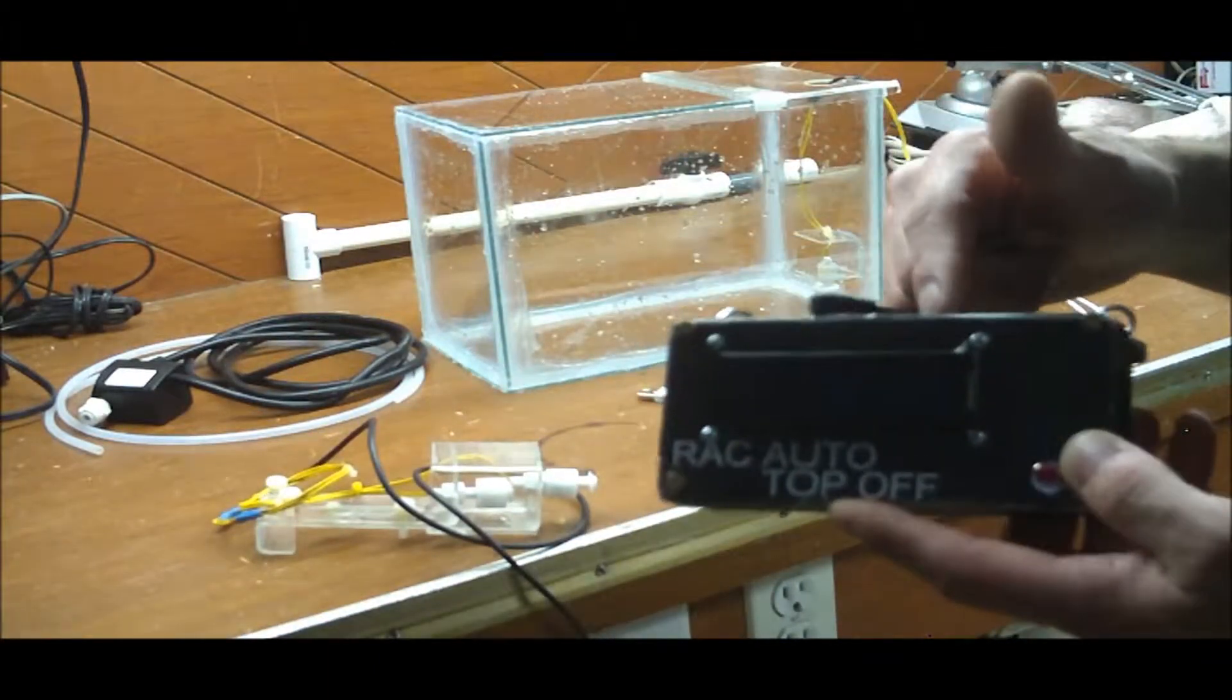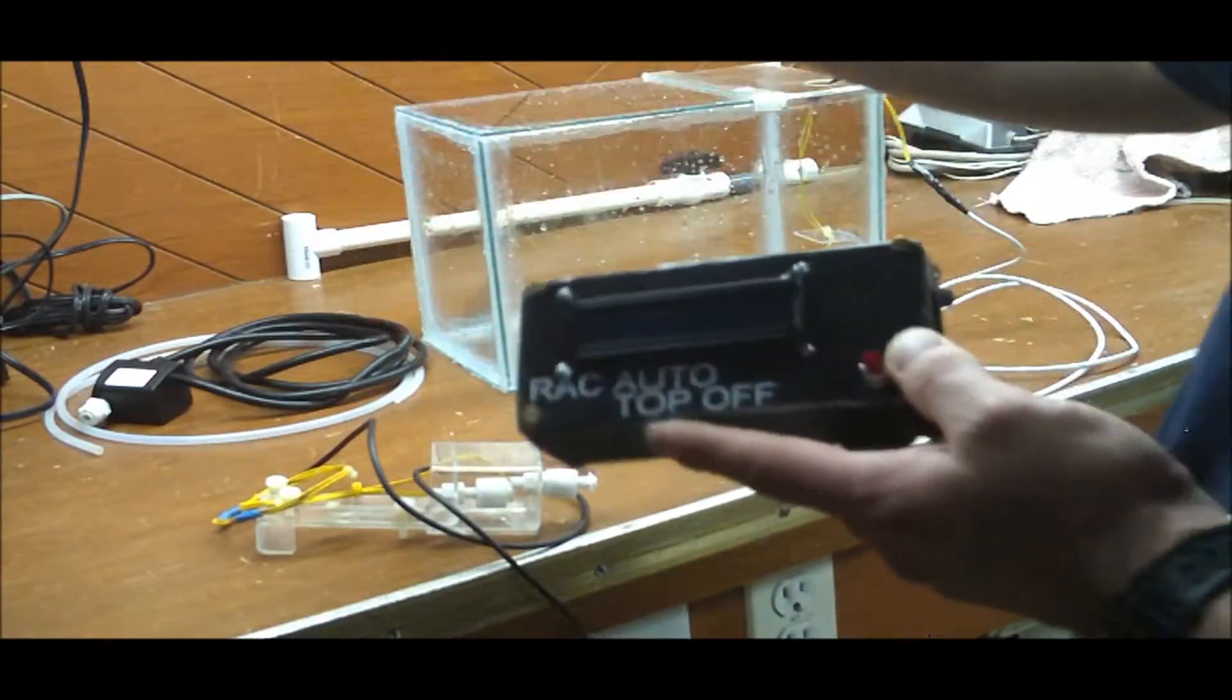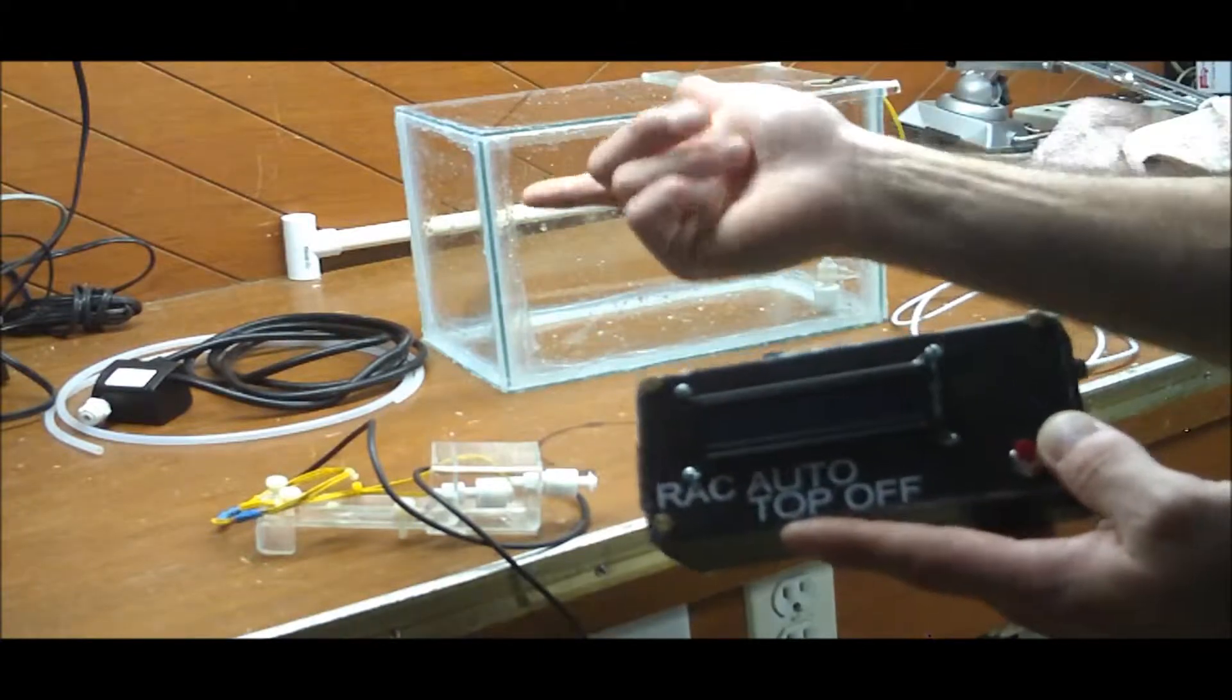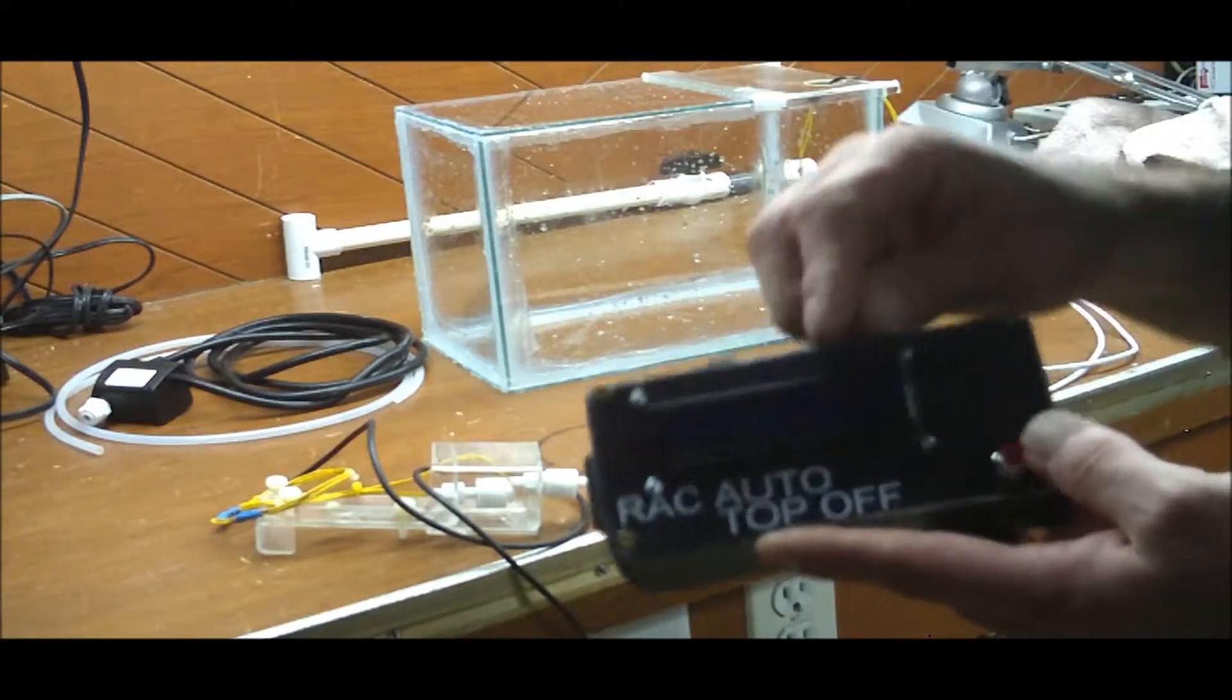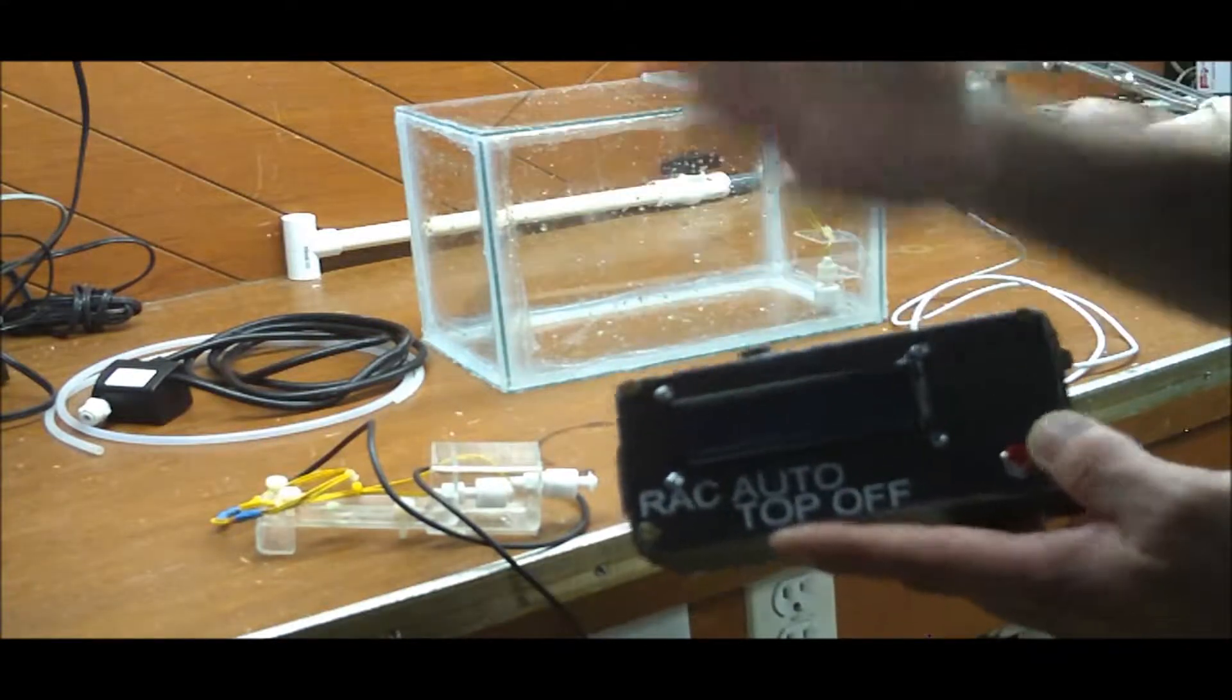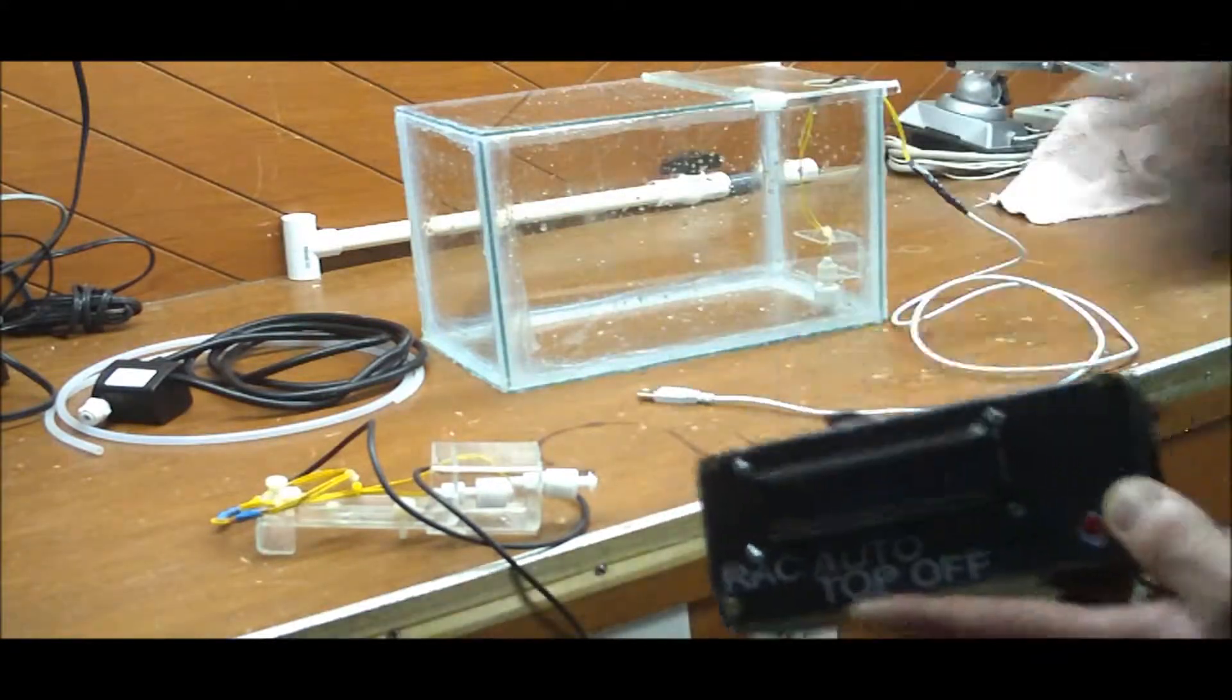It'll run this pump for, in this particular application I found that in 20 seconds it pumps about a cup of water. And I'll only do that once an hour. And the way it keeps track of that is through the real time clock. So, I put a real time clock in there so that it'll know the date and time that it ran.